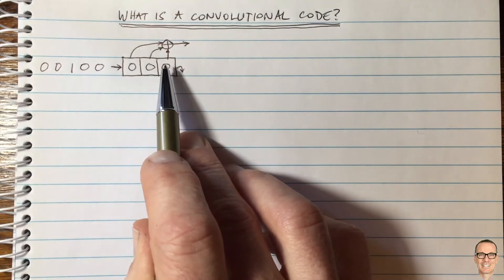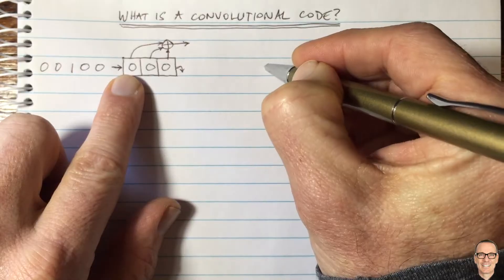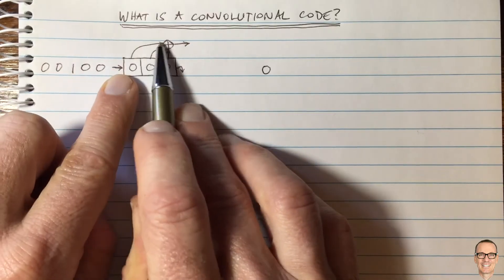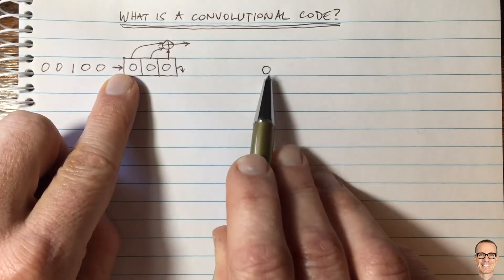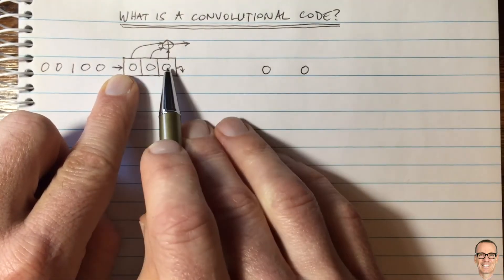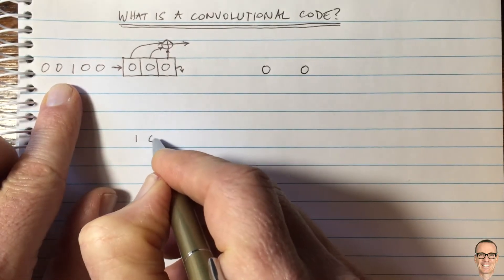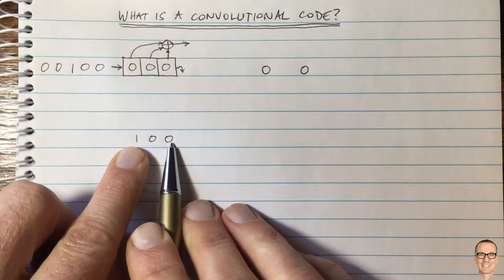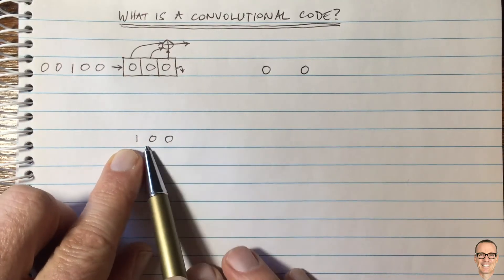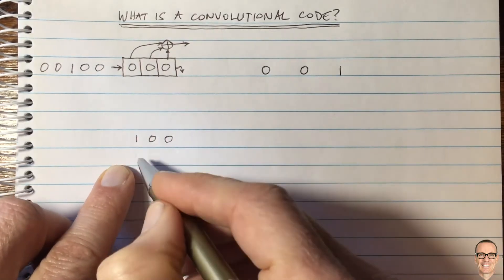If the register is filled with zeros and we put a zero in, everything clocks along, we're still full of zeros, and the output is zero. The next input is another zero — the parity bit is again zero. Then when a one comes in, the elements of the shift register become one, zero, zero. So we get one plus zero plus zero, which equals one — the next output is a one.